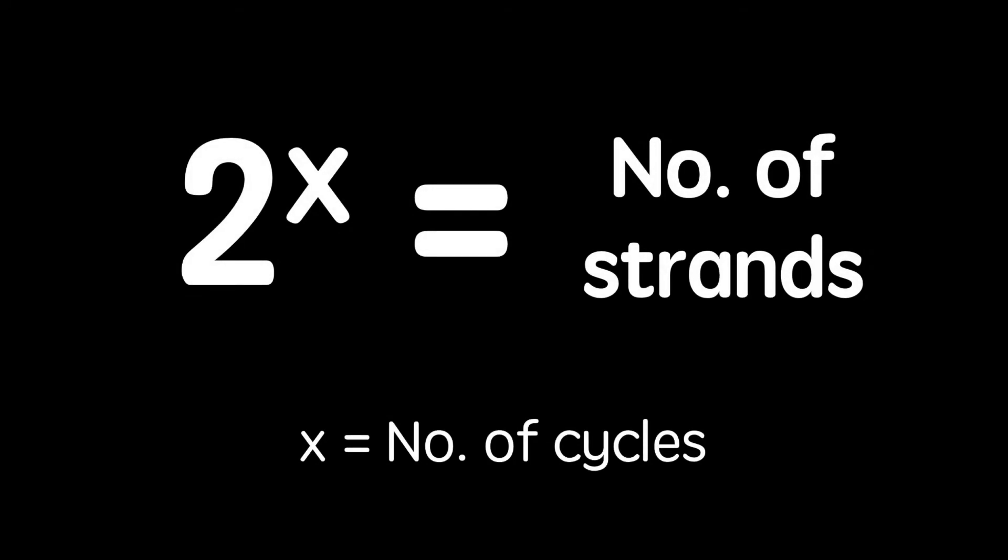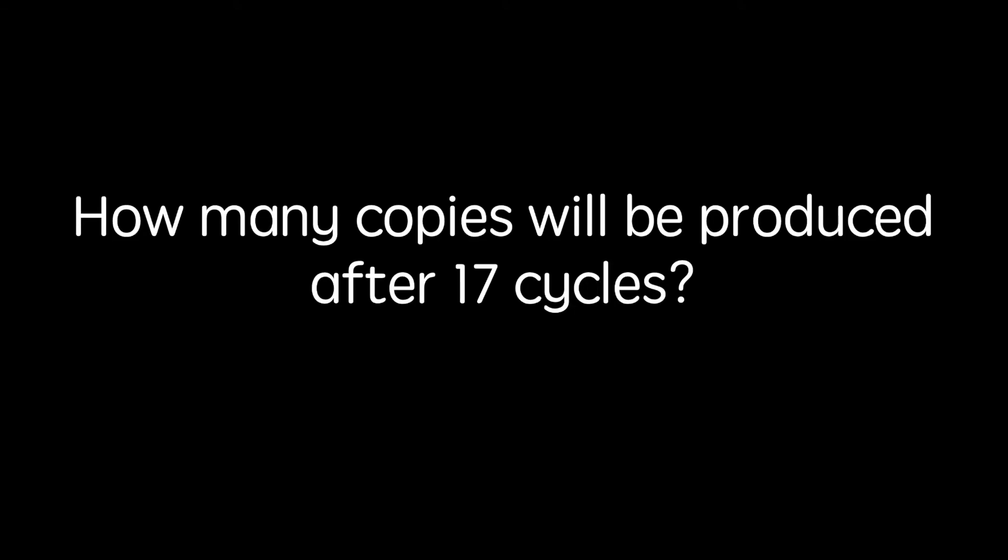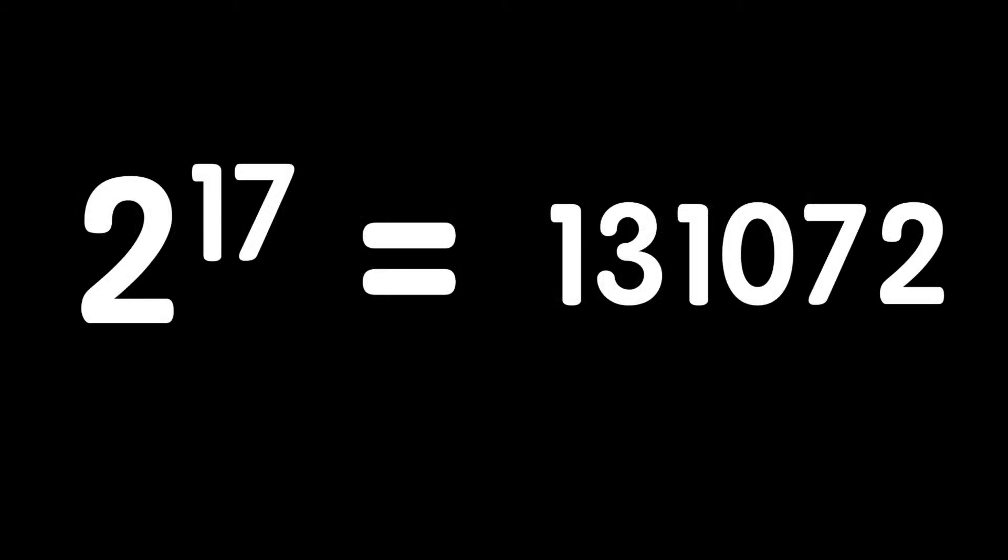Let's try some practice questions. How many copies will be produced after 17 cycles? Pause this video now to test your knowledge. Two to the power of 17 is 131,072.